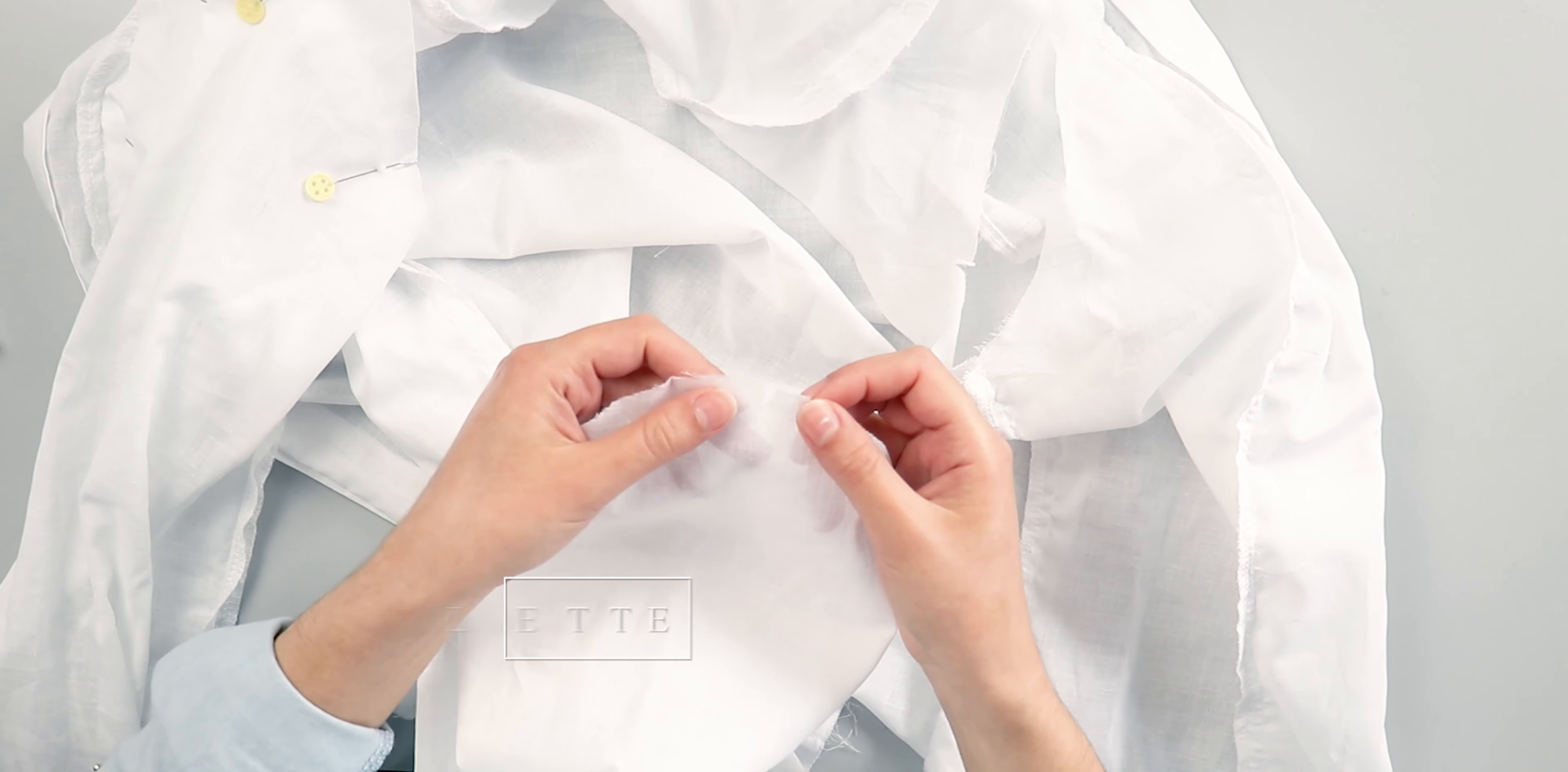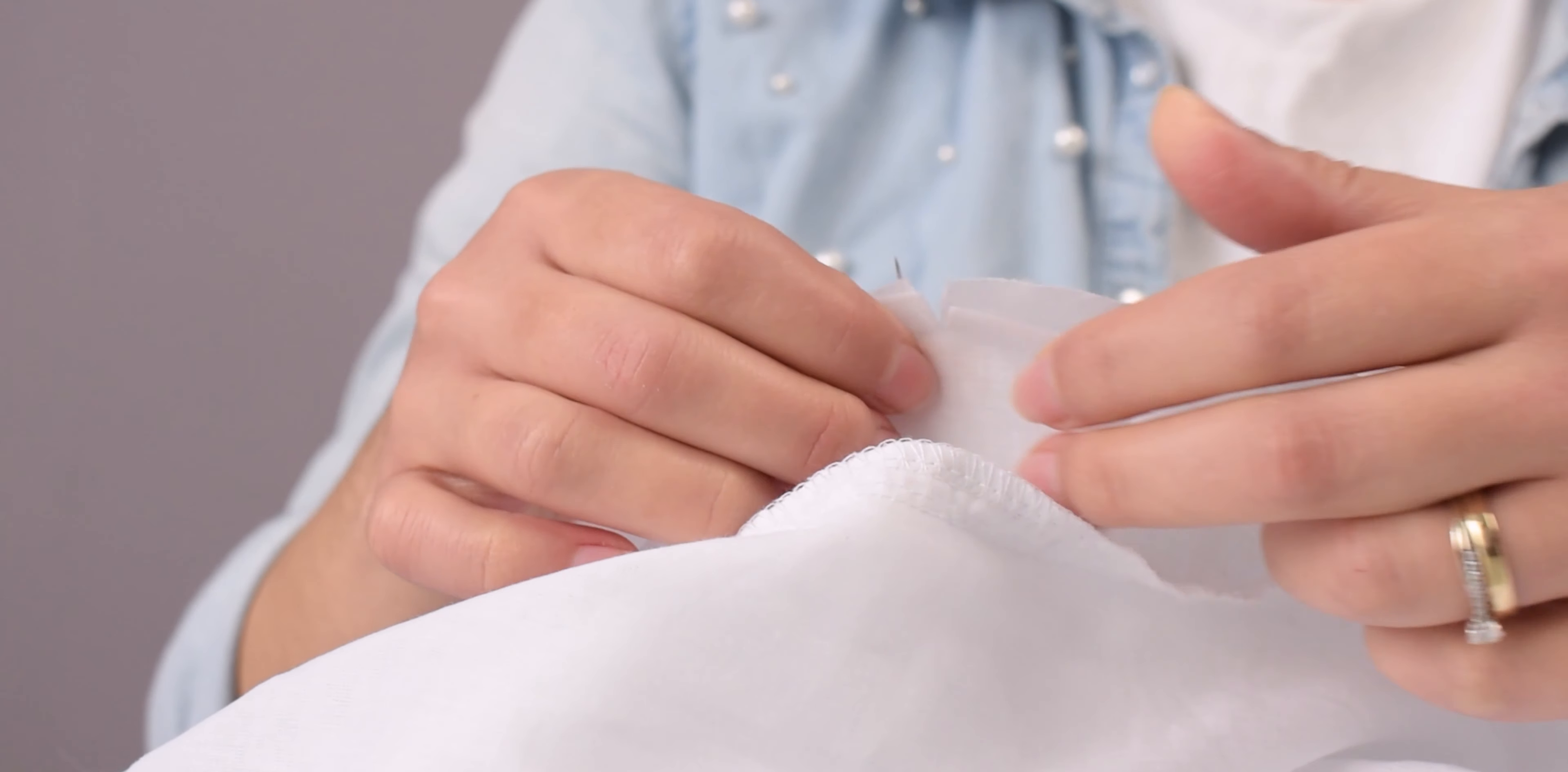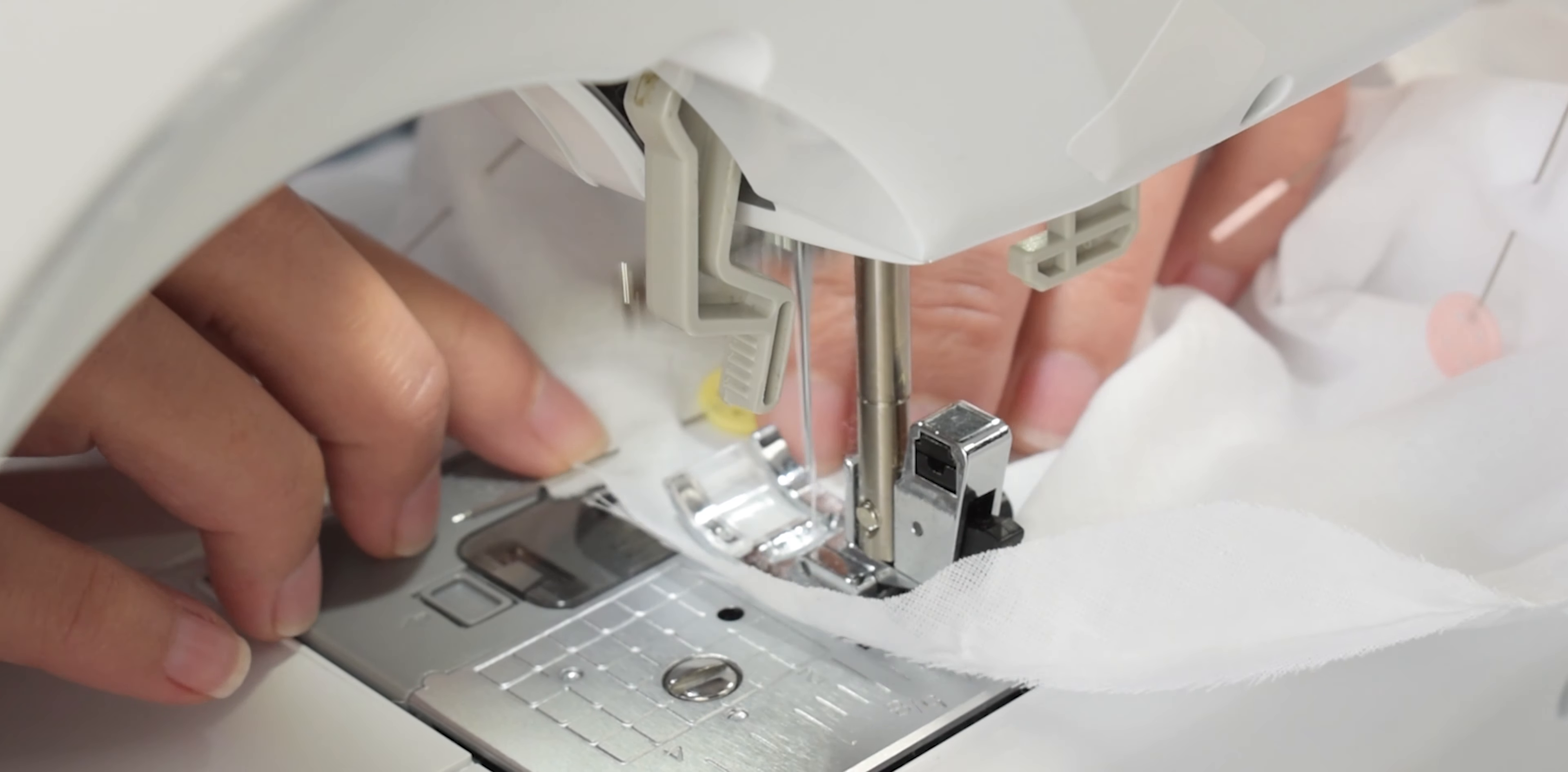Now we will attach the top of the sleeve to the armhole. Make sure that you match the right sleeve with the right armhole. You can easily do this by matching the notches in the top of the sleeve and the armhole. Carefully sew it in place and then overlock the edge.